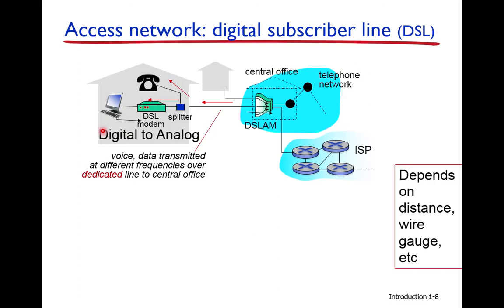The DSL modem converts digital to analog signal, and at the central office the analog signal is converted back to digital. When data is transmitted toward the internet it is converted from analog to digital.